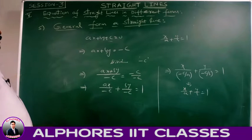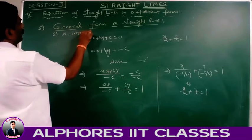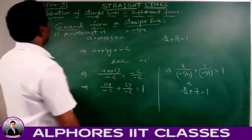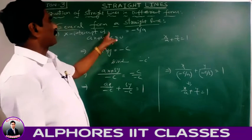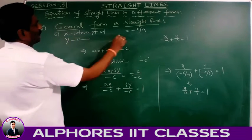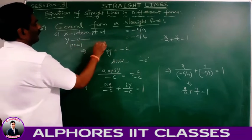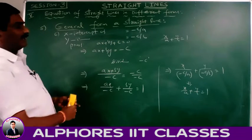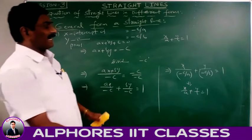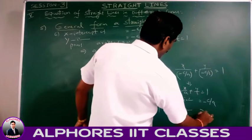Please note: x-intercept of the line ax + by + c = 0 is -c/a, and y-intercept is -c/b. Proof: given line ax + by + c = 0 → ax + by = -c. Dividing both sides by -c and reducing to intercept form, we get x-intercept = -c/a and y-intercept = -c/b.